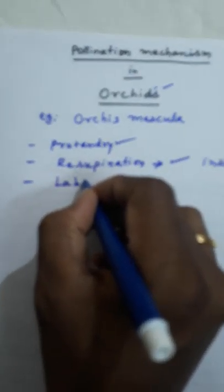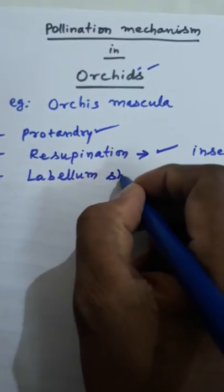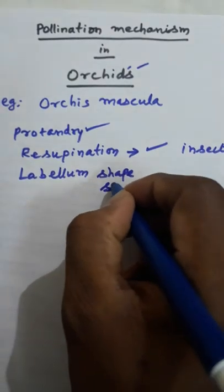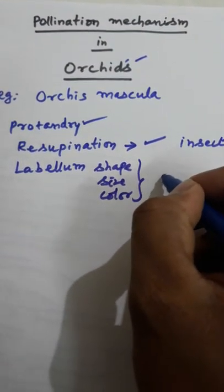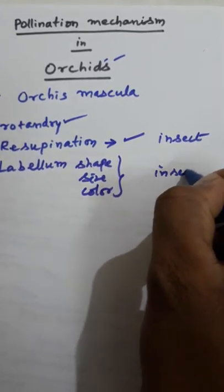Labellum shape, size, and color. These three characters are attracted to the insect.